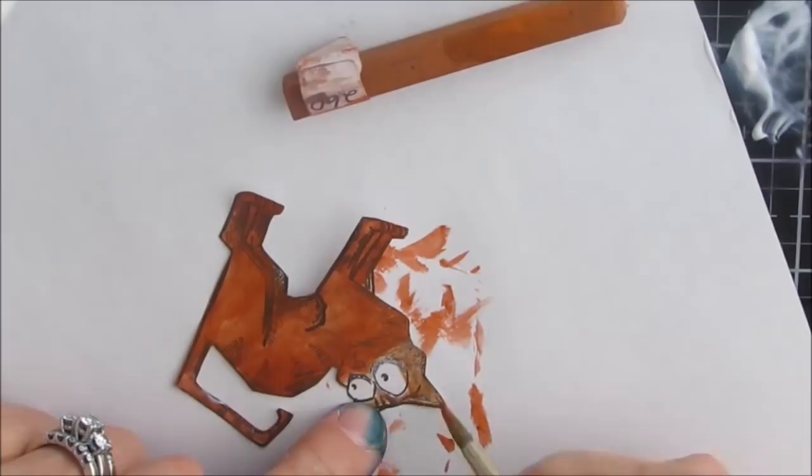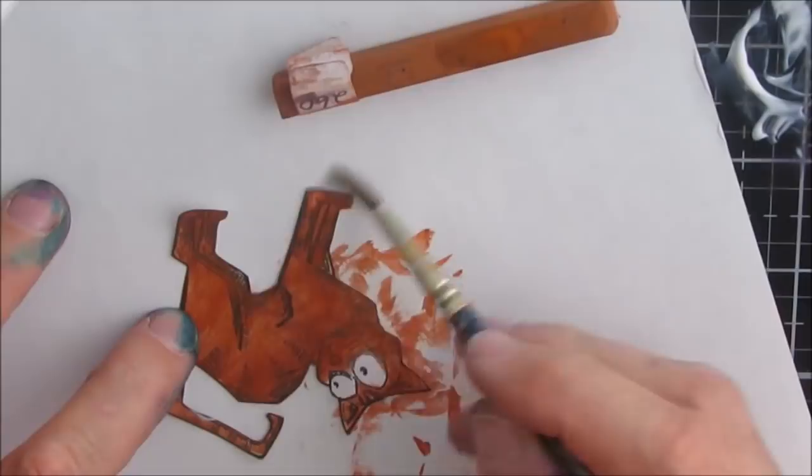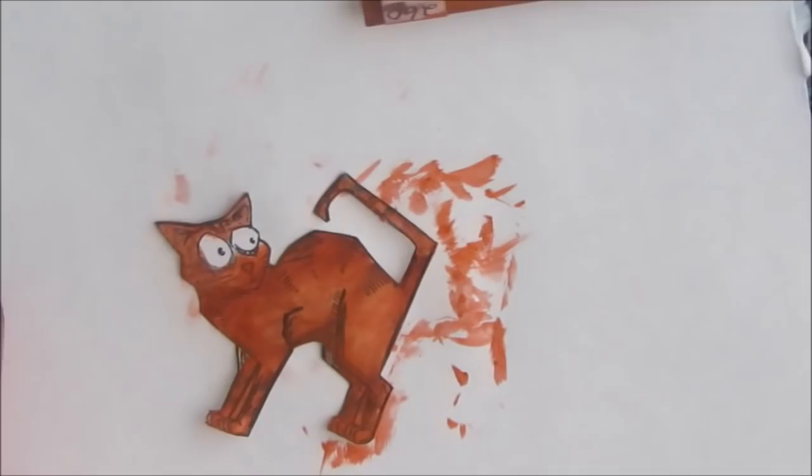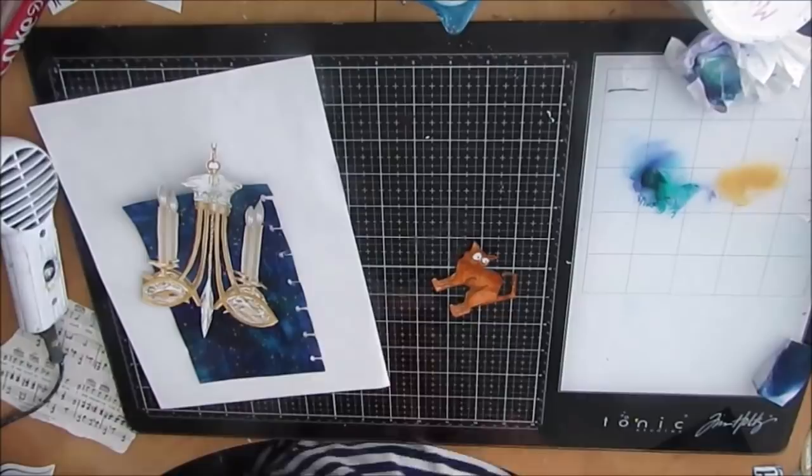The color that I had was too close to the gold of the chandelier, so now you can see it really pops. So I'm just using the pit brush markers now.